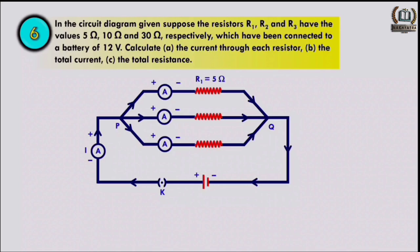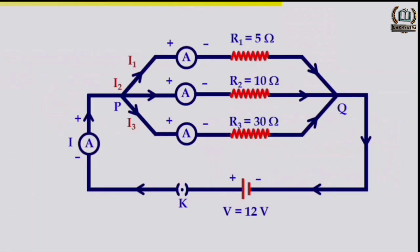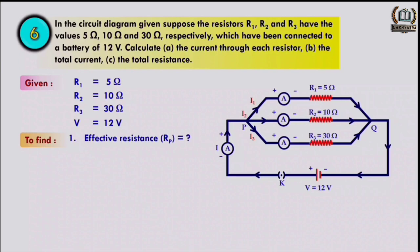Question number six: resistors R1, R2, and R3 have values 5 ohm, 10 ohm, and 30 ohm respectively, connected in parallel to a 12 volt battery. Calculate the current through each resistor, the total current, and the total resistance. Given: R1 = 5 ohm, R2 = 10 ohm, R3 = 30 ohm, V = 12 volt.